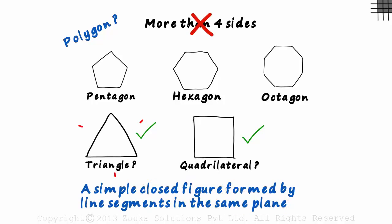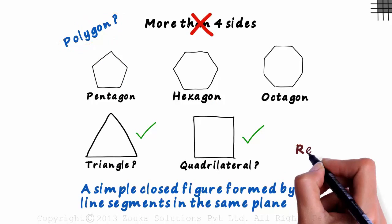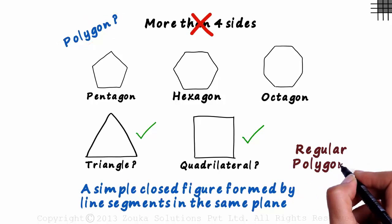The number of sides may be three, four or five or maybe even one hundred. It will still be a polygon. But what is a regular polygon? We will see that next.